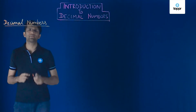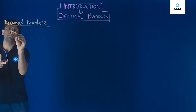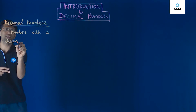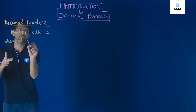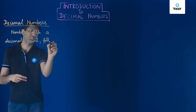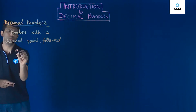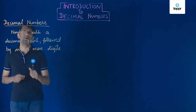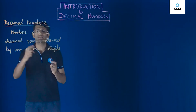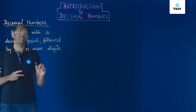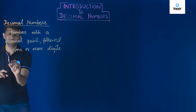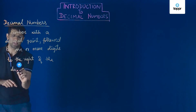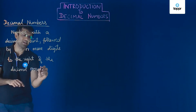If you want to see the definition of decimal numbers, we can say that simply put, decimal numbers are numbers with a decimal point which is followed by one or more digits. So numbers with a decimal point followed by one or more digits to the right of the decimal point are called decimal numbers. This is the simplified definition of a decimal number.